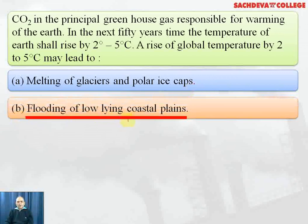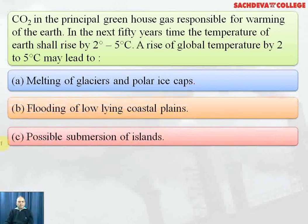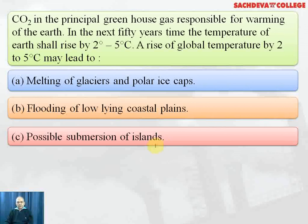Flooding of low-lying coastal plains and possible submersion of islands are major consequences. Some people say that in the next 200 to 300 years, all the coastal cities of the world, due to the increase in the level of the ocean, will be submerged.